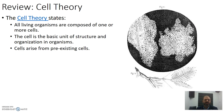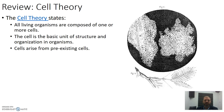Let's have a look back at the cell theory. The cell theory has three main points and you should know all three of these. The first is that all organisms are composed of cells — one or more cells, single-celled organisms or multicellular organisms. The cell is the basic unit of structure, function and organisation in organisms, and that all cells arise from pre-existing cells.